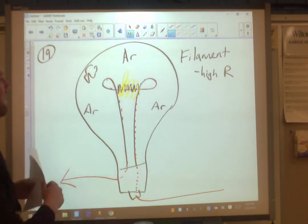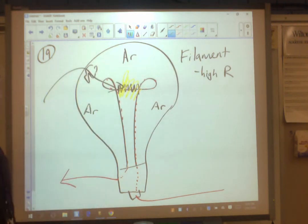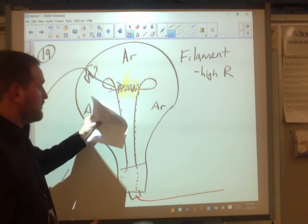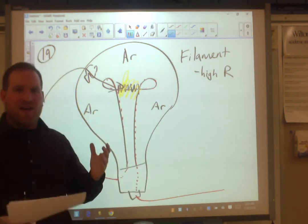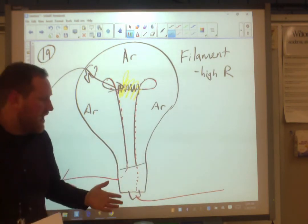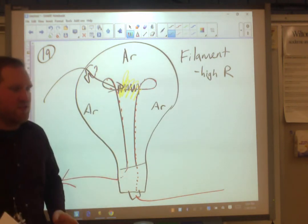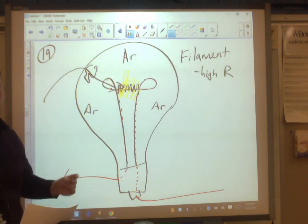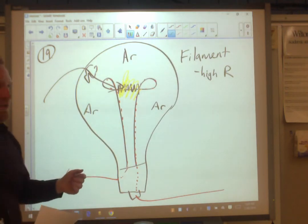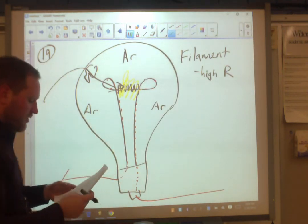Now if the bulb breaks, all of a sudden you have all this oxygen rushing inside, and that oxygen's going to react with this, cause it to form some kind of tungsten oxide compound, and tungsten oxide is not going to conduct electricity as well, or it could melt, or something's going to happen. And that pretty much happens instantly. So if the bulb breaks, light bulb's not going to work.